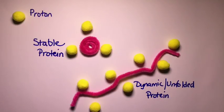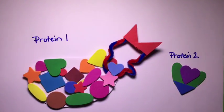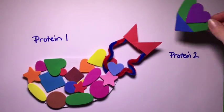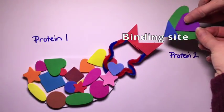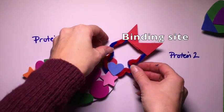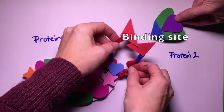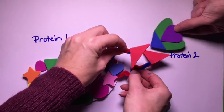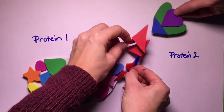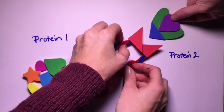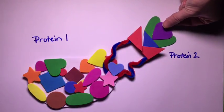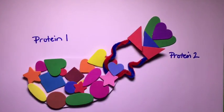To illustrate a simple use for this technique, we'll look at two model proteins which form a complex. The binding site is more flexible than the rest of the protein, and these two segments must come together to create the binding site for protein 2, thus allowing the protein complex to form.